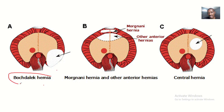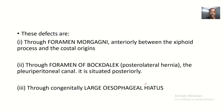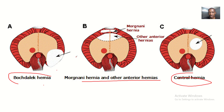We have the Bochdalek hernia, the Morgagni hernia, and the central hernia. The Morgagni hernia occurs through the foramen of Morgagni, which is anteriorly through the xiphoid process and the costal origin — this is the anterior part of the diaphragm.